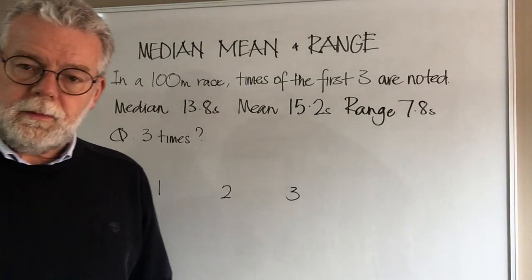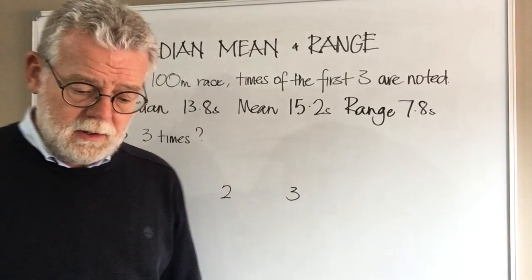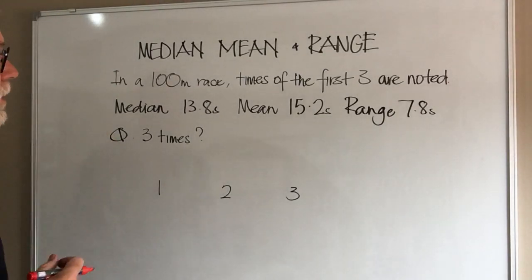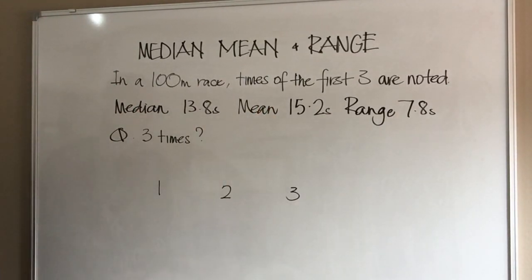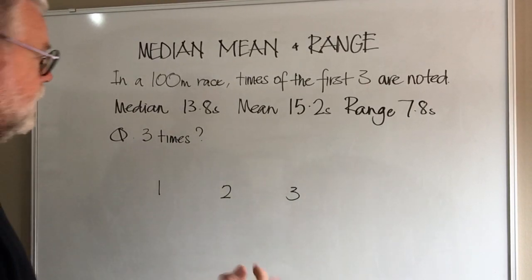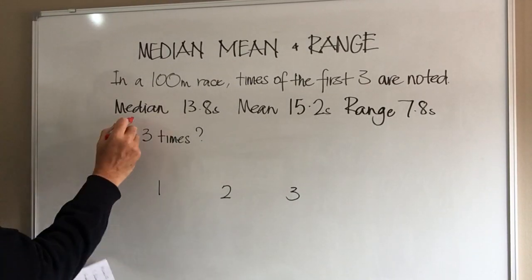Now we're going to look at a word problem where three pieces of information are given to us. This is a typical type of question we'll come across. In a 100 meter race, the times of the first three runners past the post are noted.